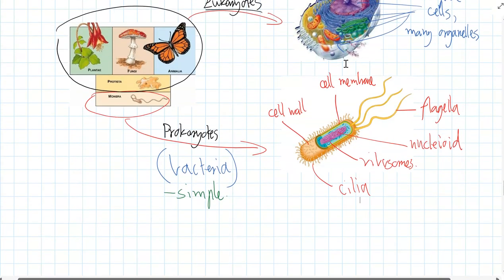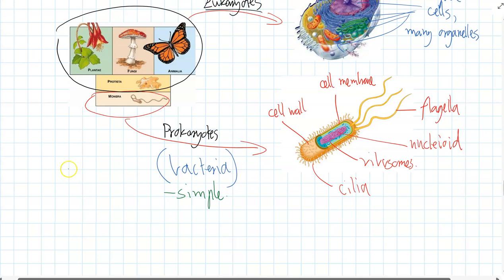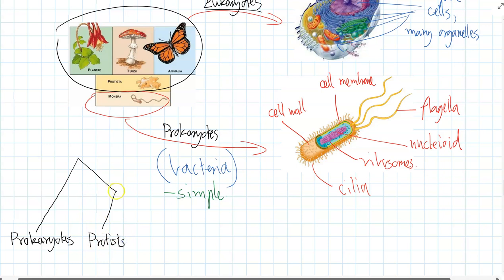Thinking in terms of evolution can help you remember all five kingdoms. Prokaryotes evolved first on the evolutionary tree. The protists evolved next and branch off next. Then the plants are least closely related to the other two. And then we have animals and fungi as the other two kingdoms. Animals are actually most closely related to fungi out of all the other four kingdoms.